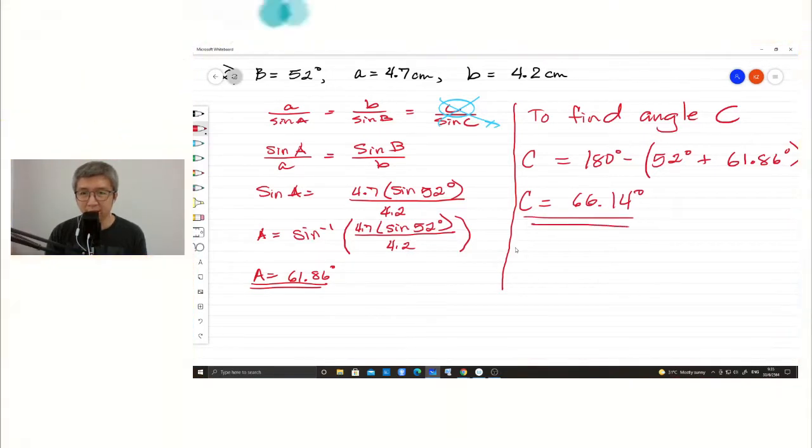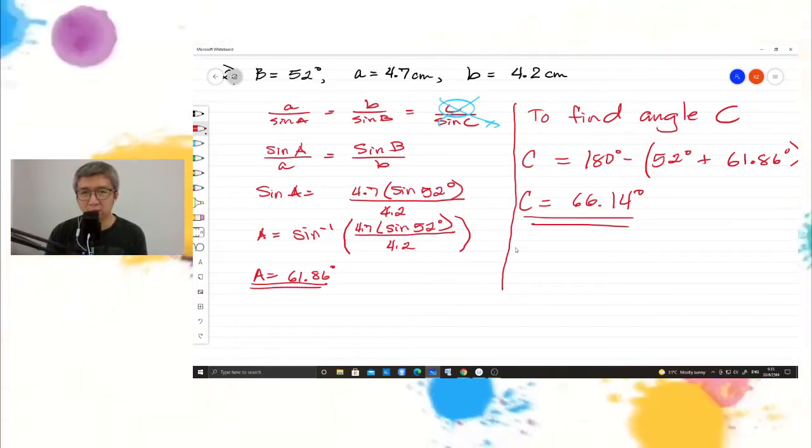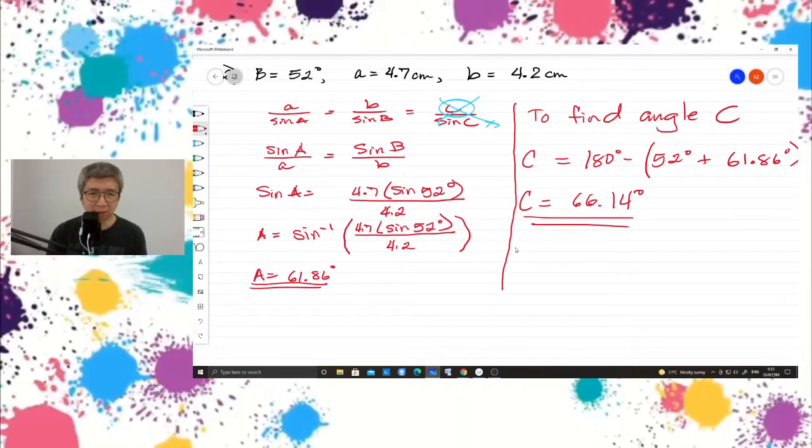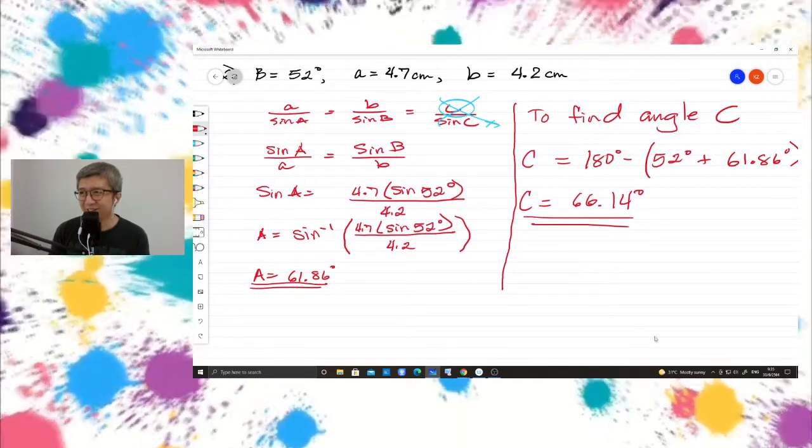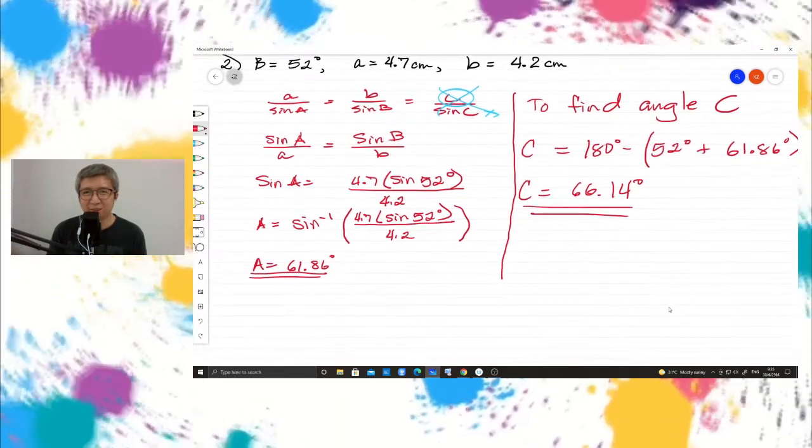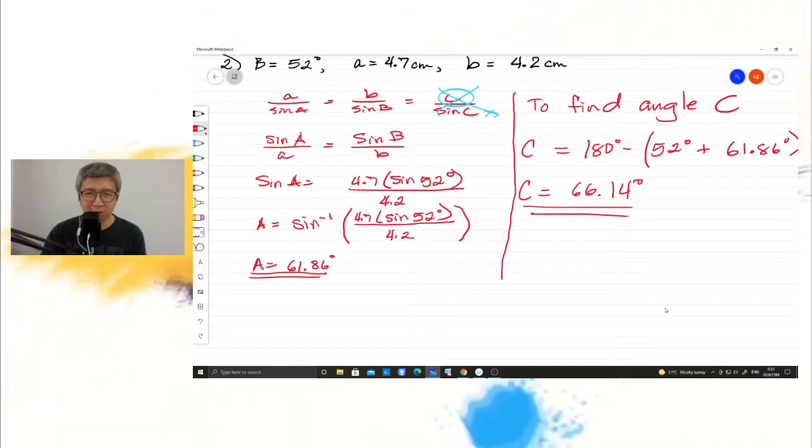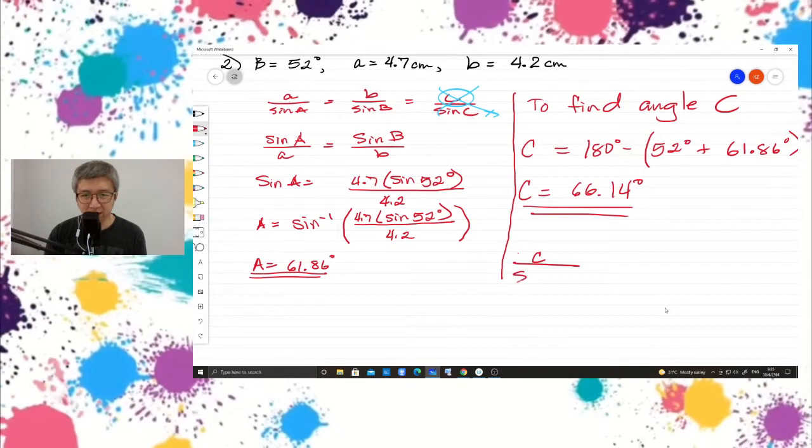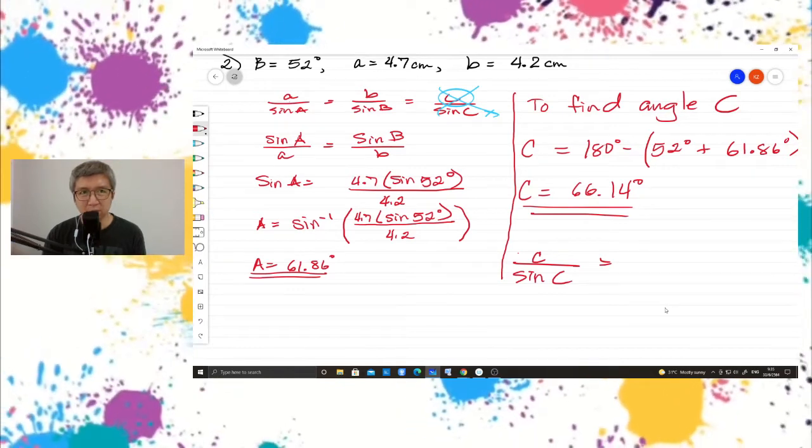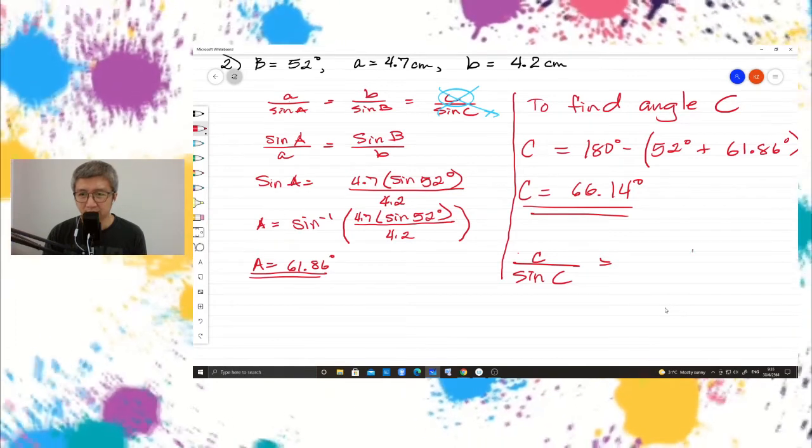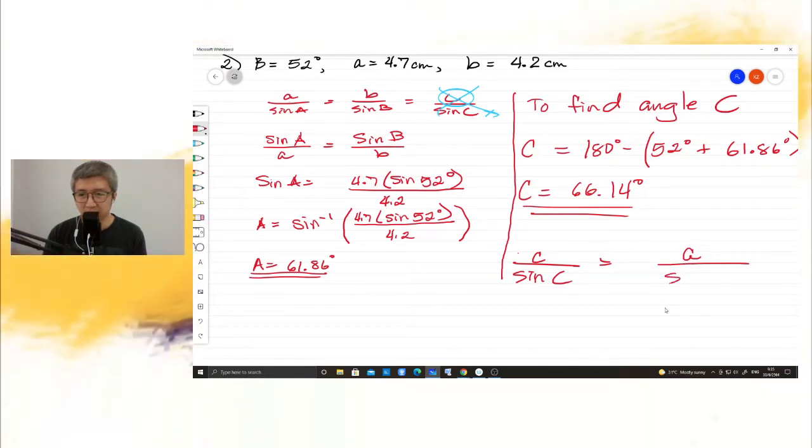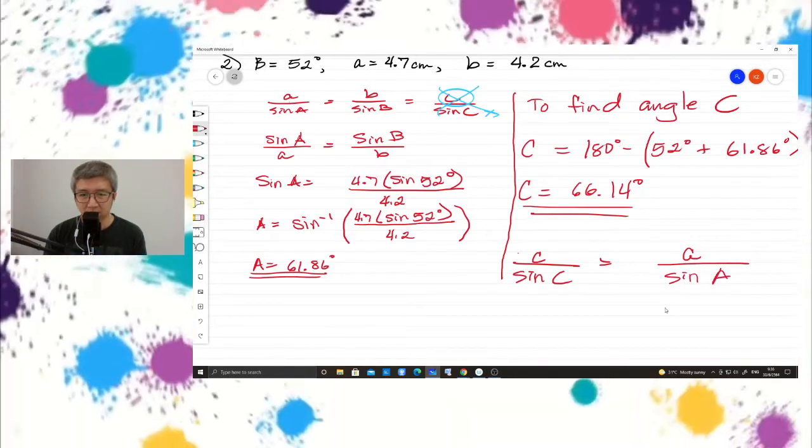So, now, since we have angle C, we are now able to find the side C. Syria, are you still okay? Still okay? Fighting. Yeah, because if online, you can open your notes. So, to find side C, we can use either B or A.